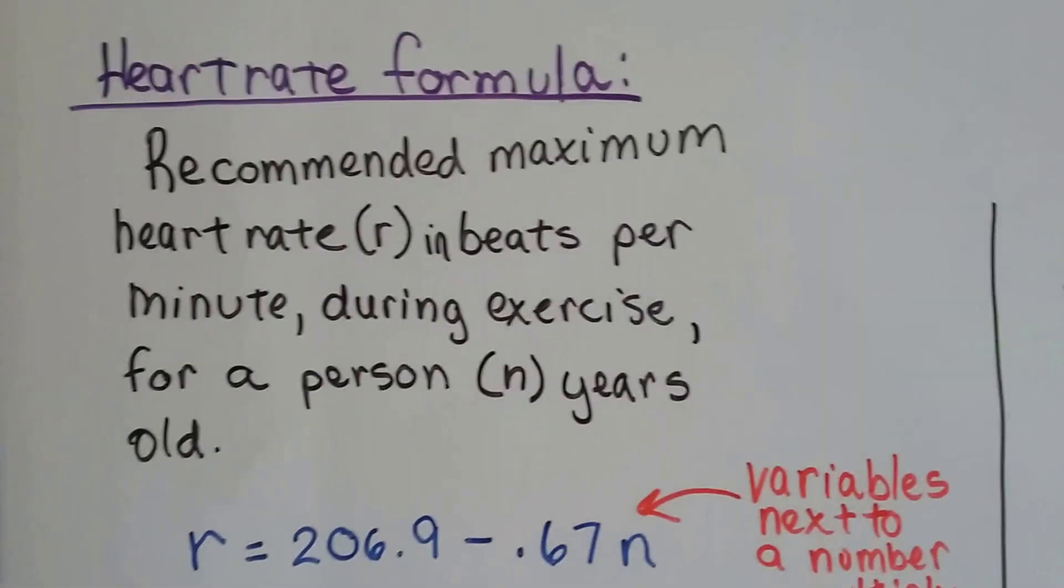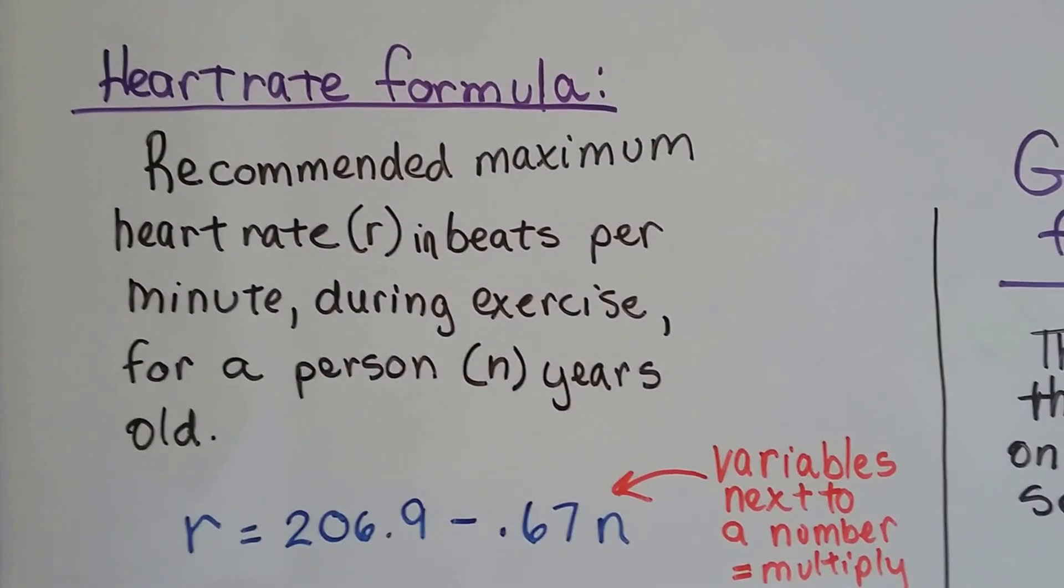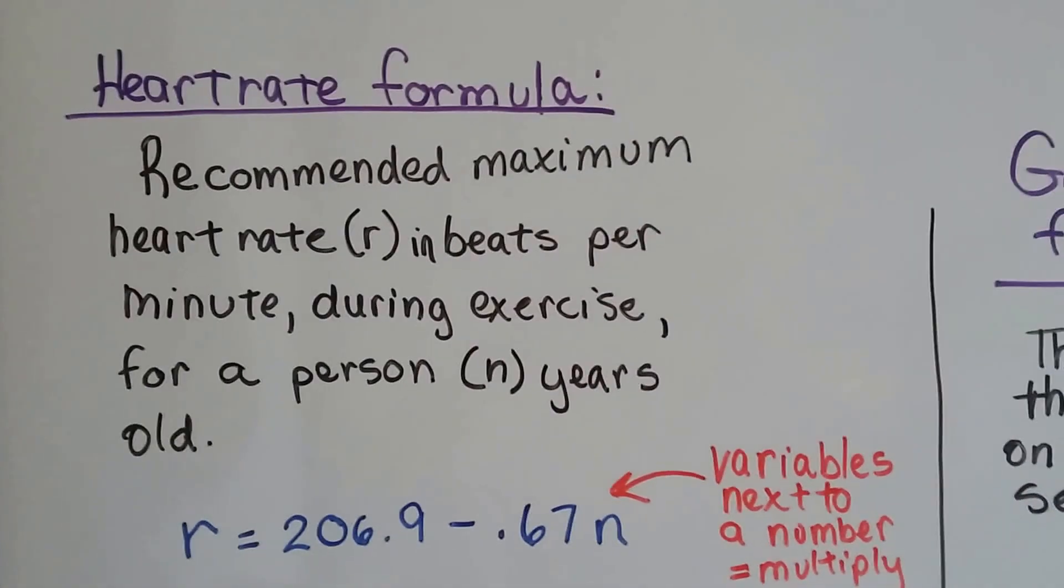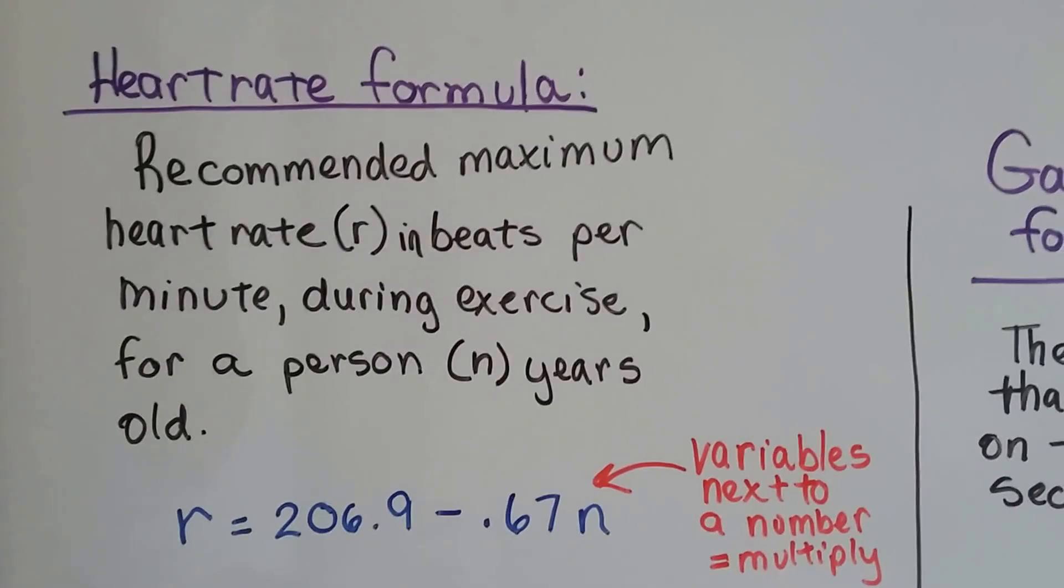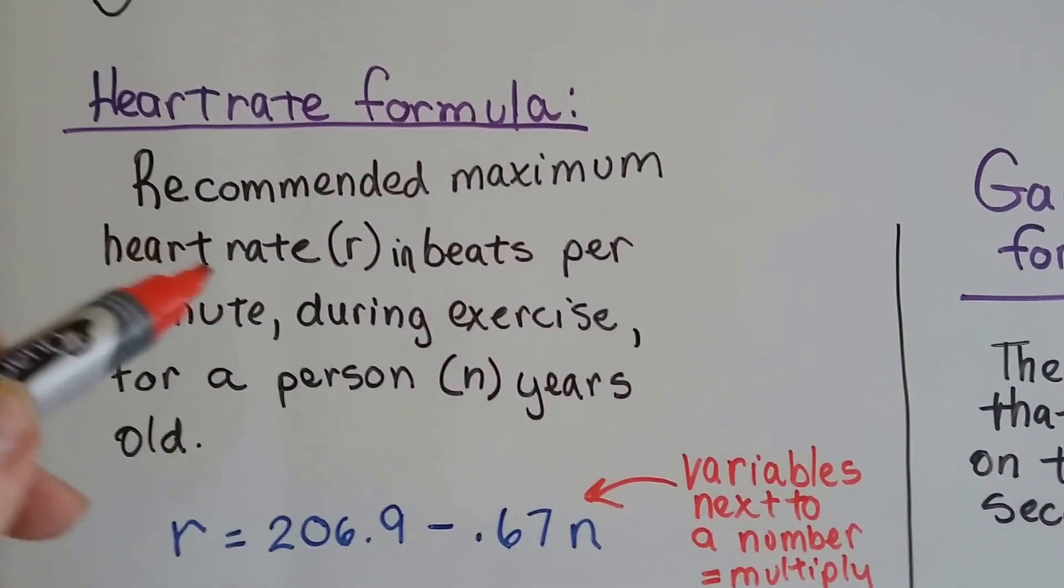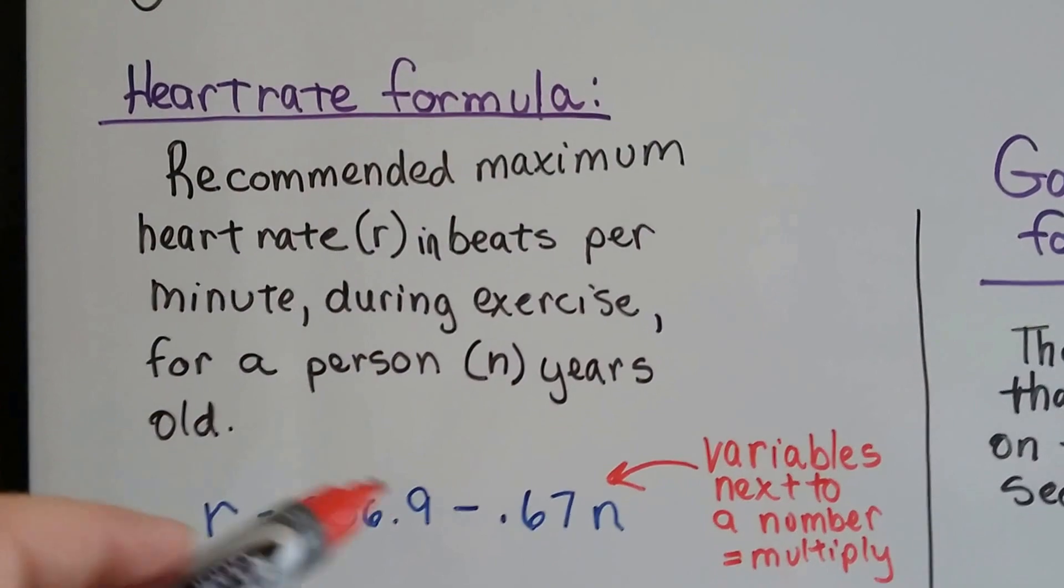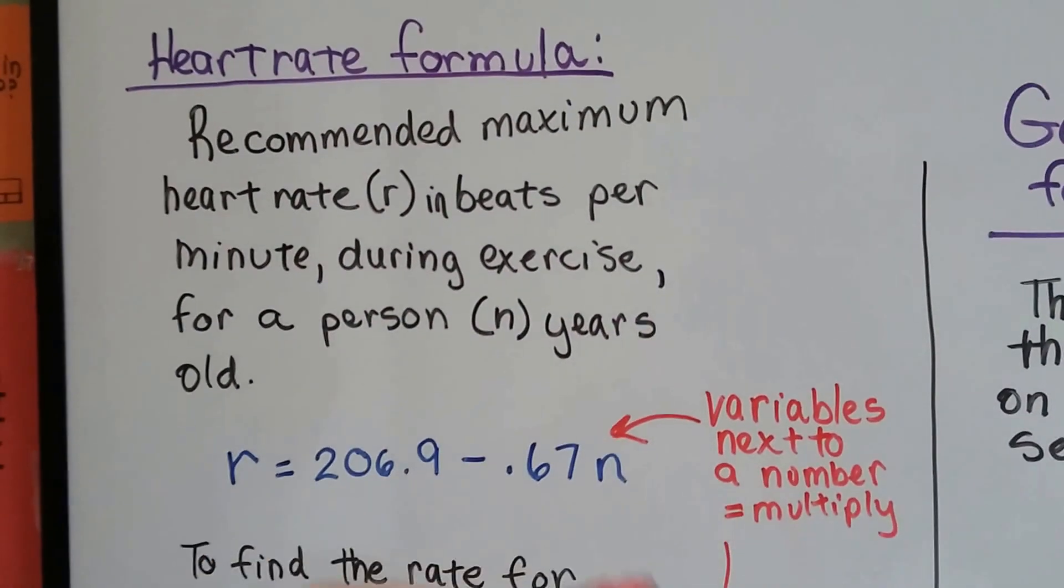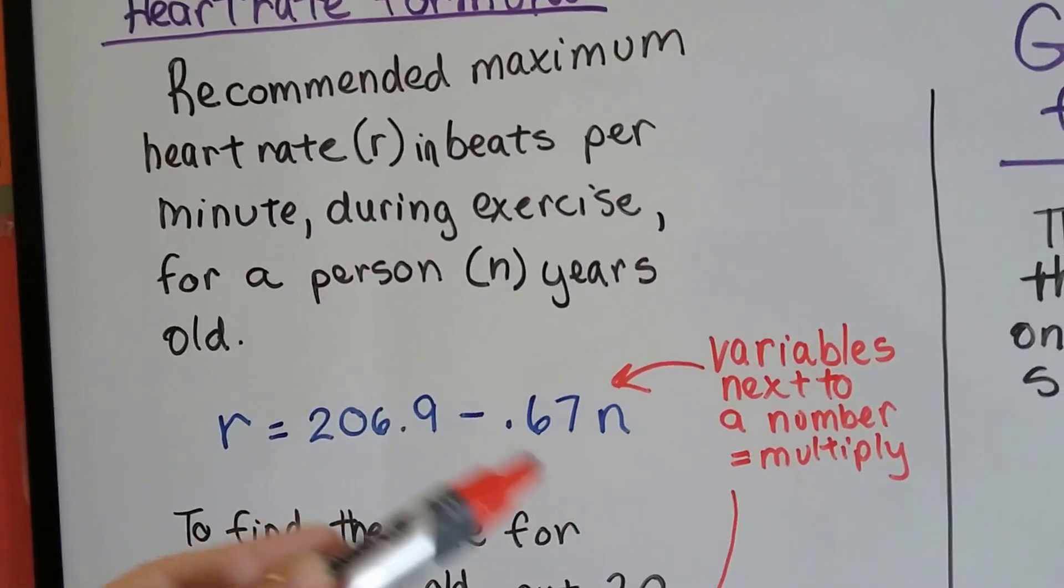This is the heart rate formula, and it's the recommended maximum heart rate in beats per minute during exercise for a person of a certain age. So what this means is how fast doctors recommend your heart beat in minutes when you're exercising. And it depends on your age. Your age is going to make it vary. If you're young, you can have a higher heart rate. If you're older, you should have a lower heart rate.